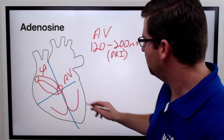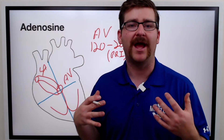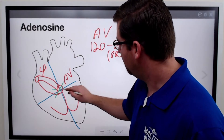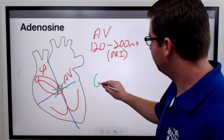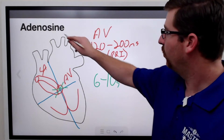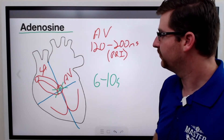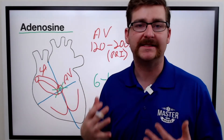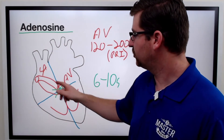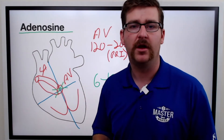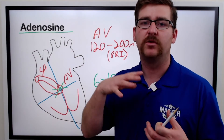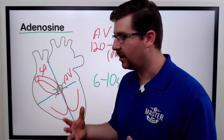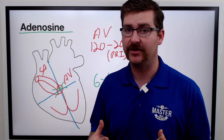So when there's PSVT or AV nodal reentrant tachycardia, it's a great idea to cut out that AV node for 6 to 10 seconds with adenosine. It basically allows any of those pathways in that area to reset. Then the SA node reinitates, electricity passes down through the AV node, and when it comes back after the adenosine wears off, it's going to be a nice, clean, organized rhythm again. So adenosine is a good thing for PSVT and AV nodal reentrant tachycardia.